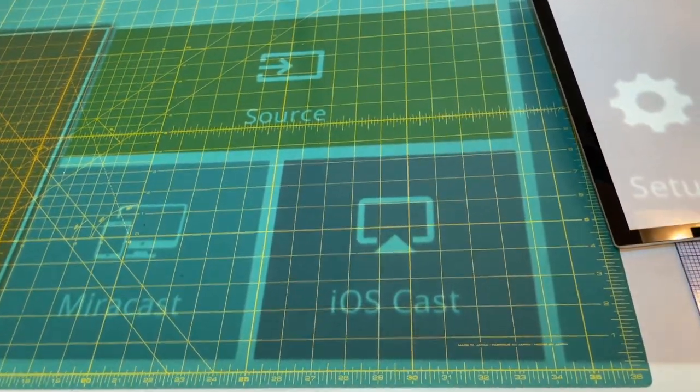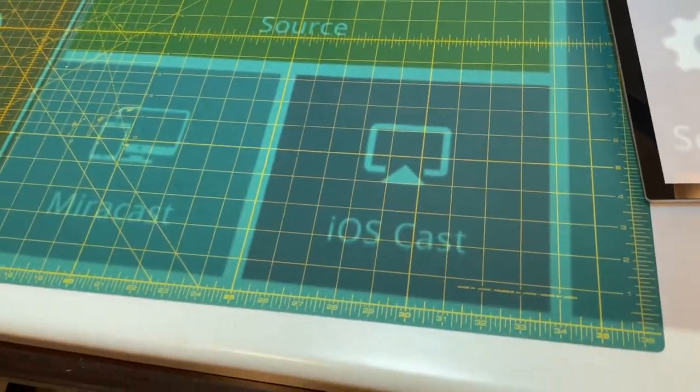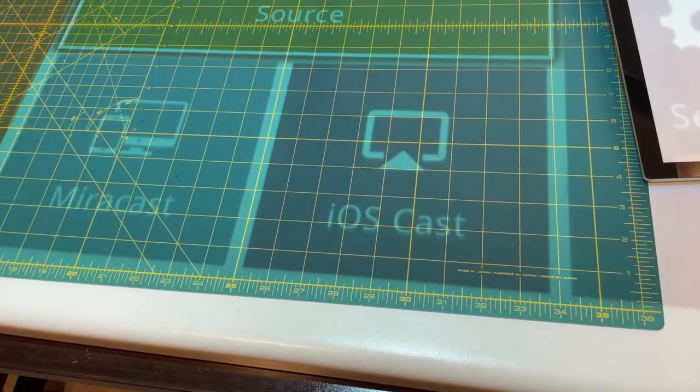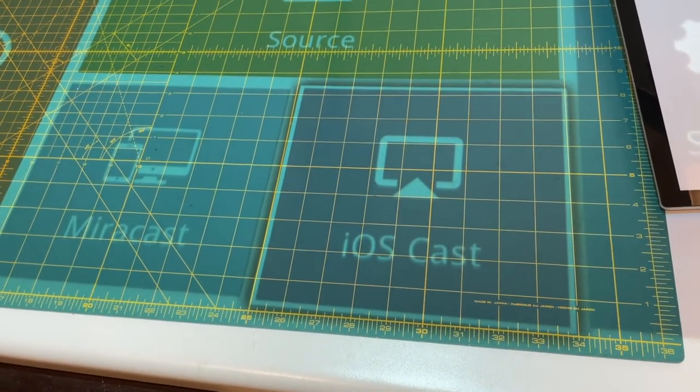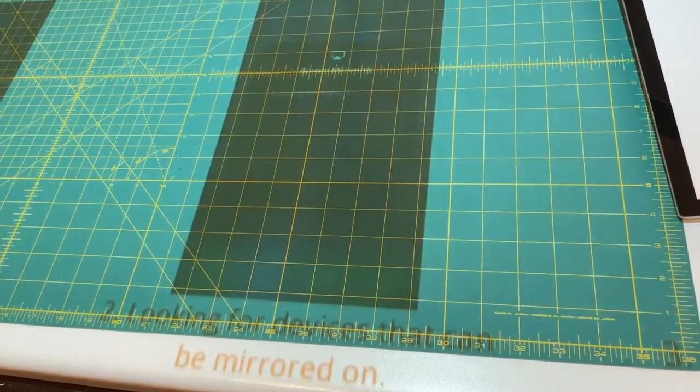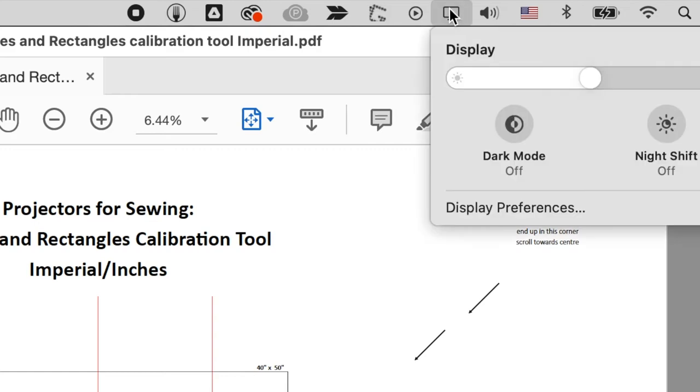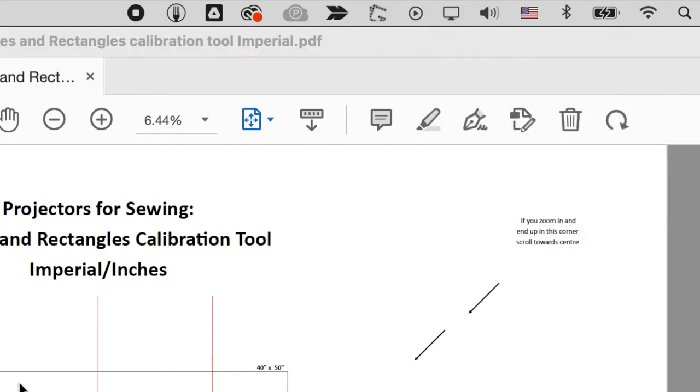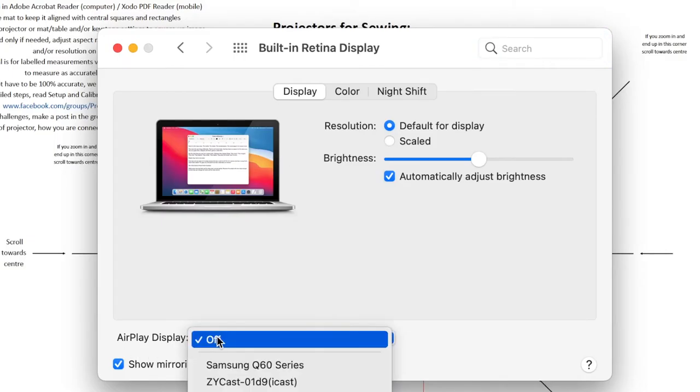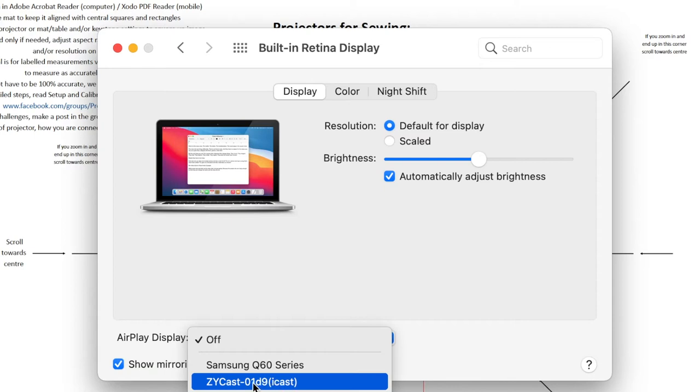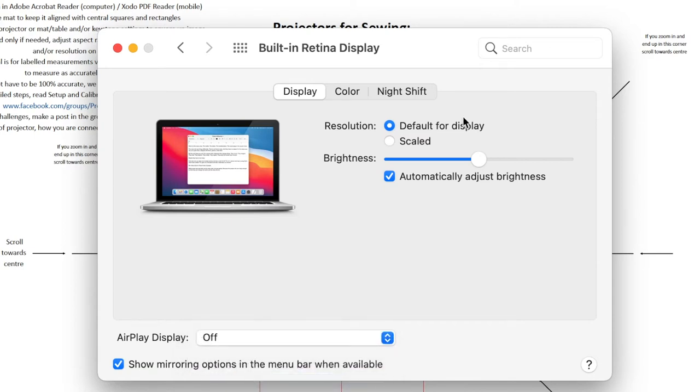So I'm going to go over here to iOS cast so that I can use it with my Mac. And then I need to go to the Mac, and then from my laptop I will turn on AirPlay from this ZY cast and that's going to extend my desktop onto the projector screen.